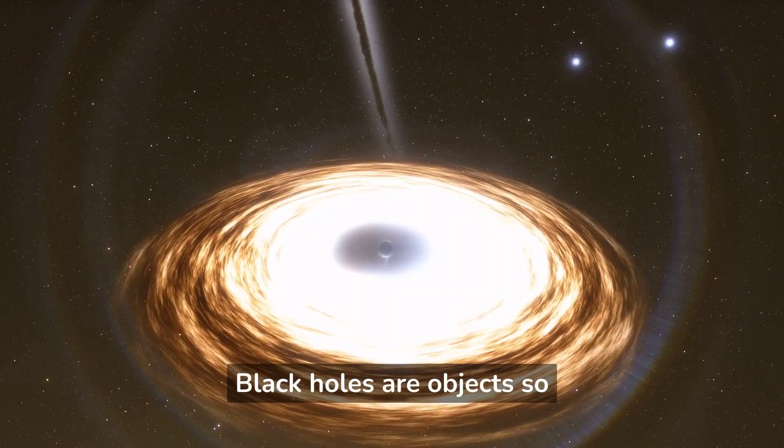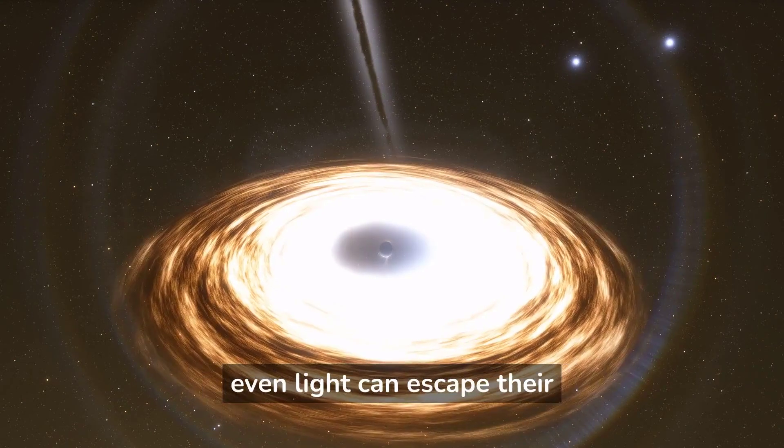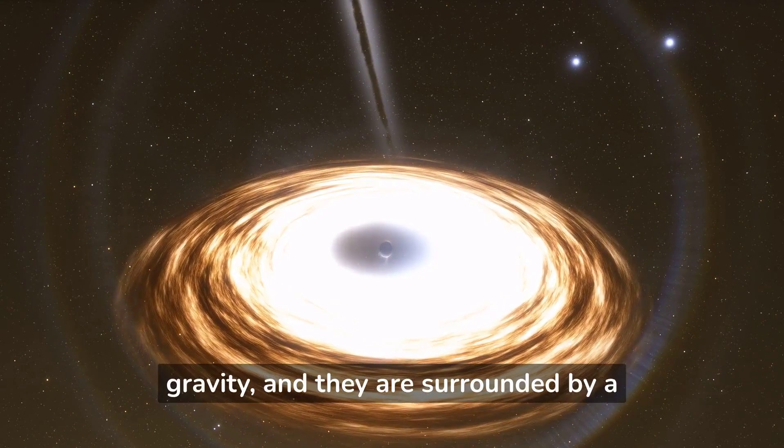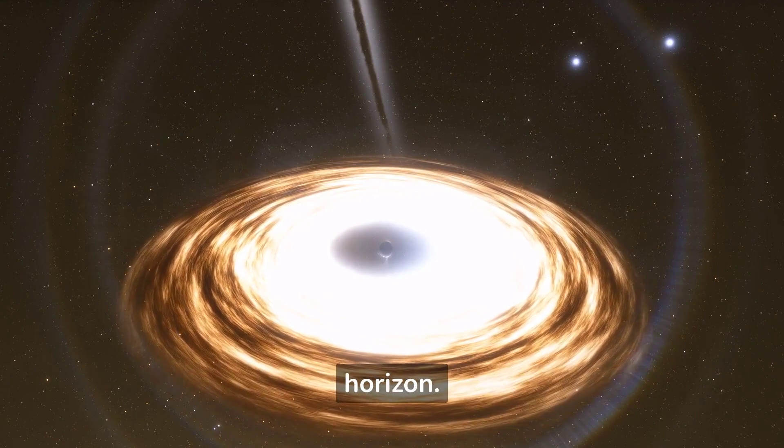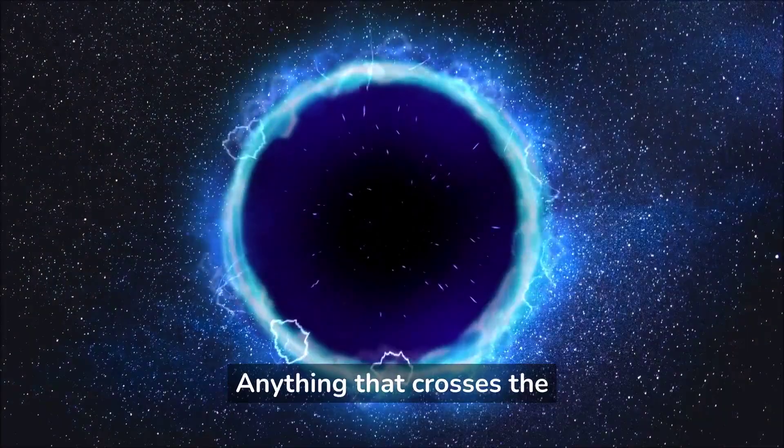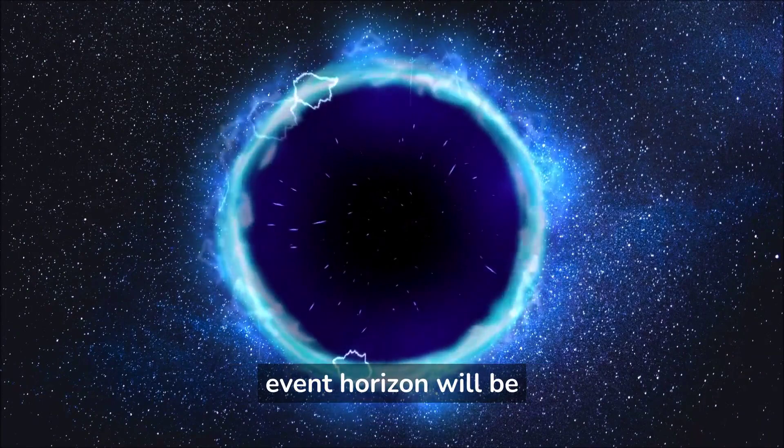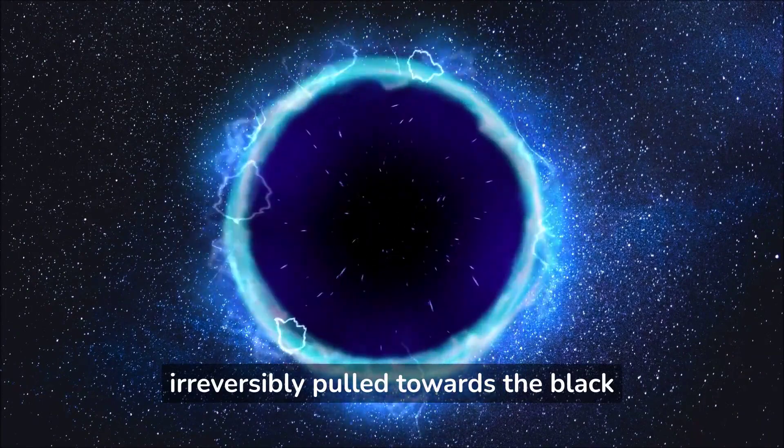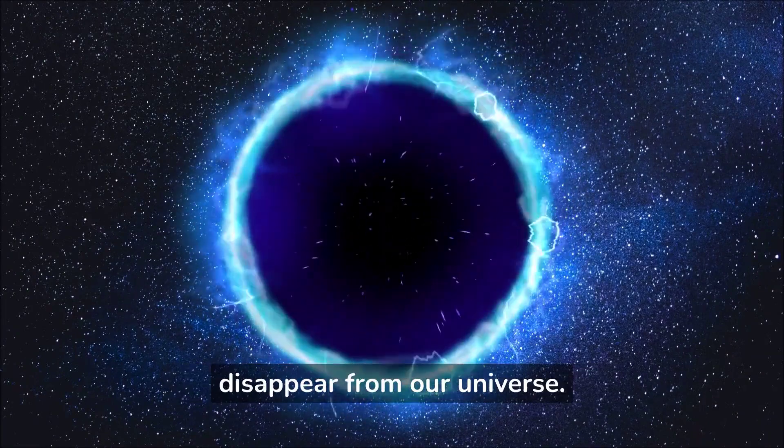Black holes are objects so massive and compact that not even light can escape their gravity, and they are surrounded by a boundary known as the event horizon. Anything that crosses the event horizon will be irreversibly pulled towards the black hole and will eventually disappear from our universe.